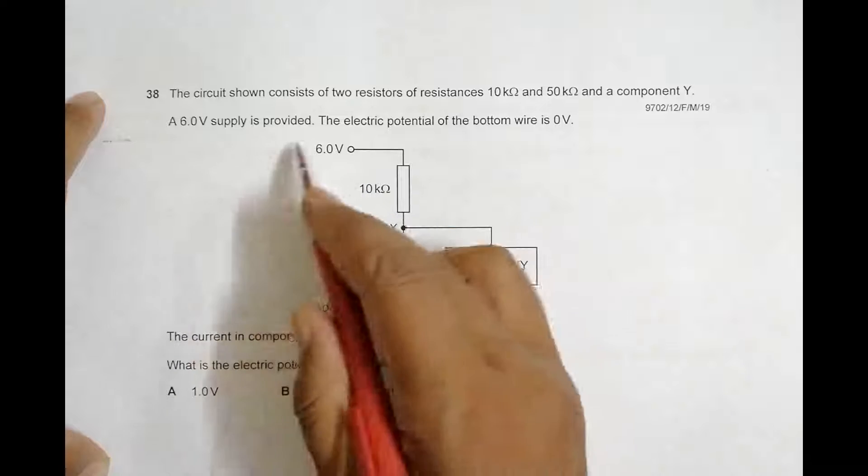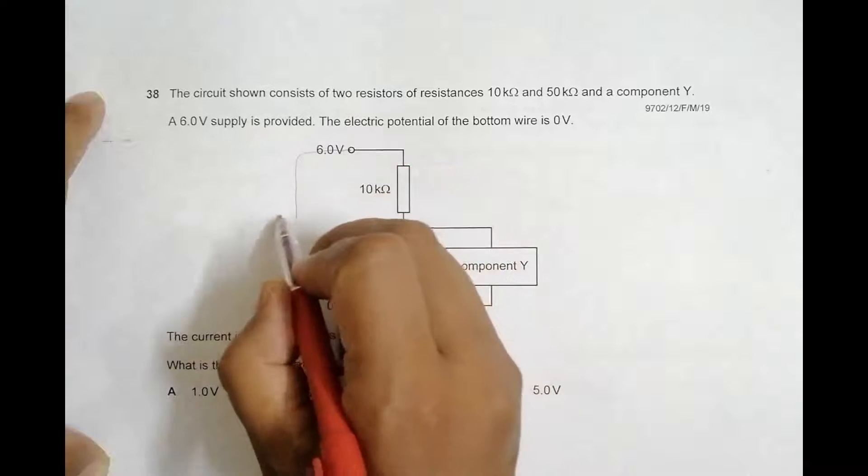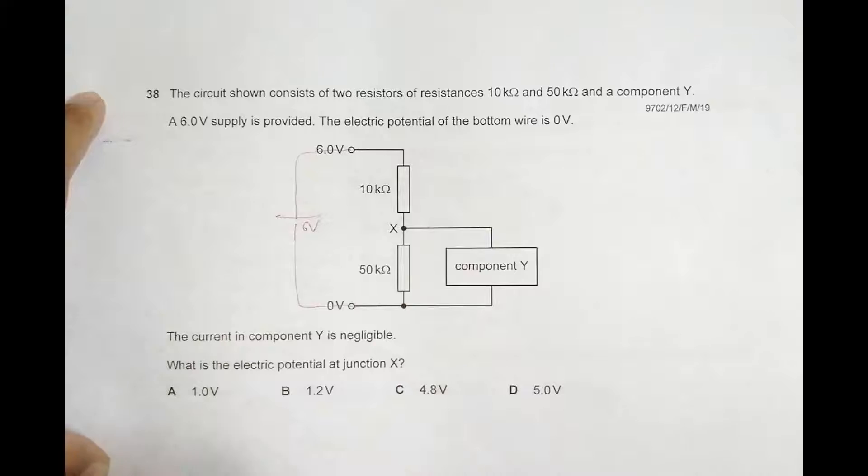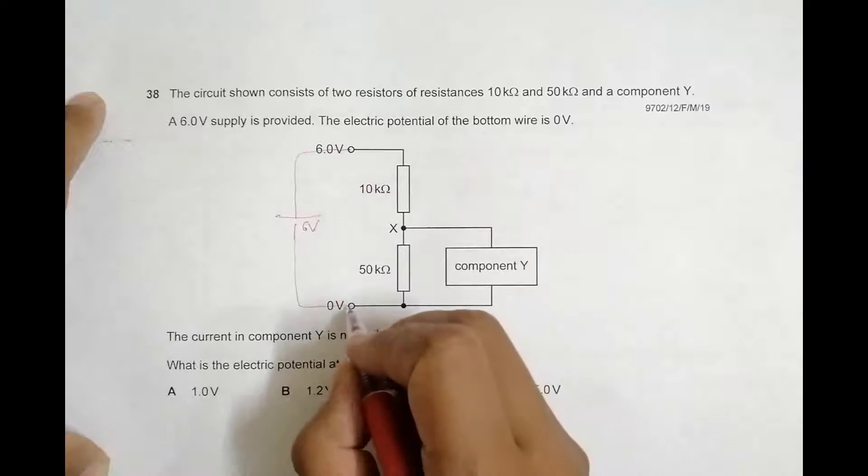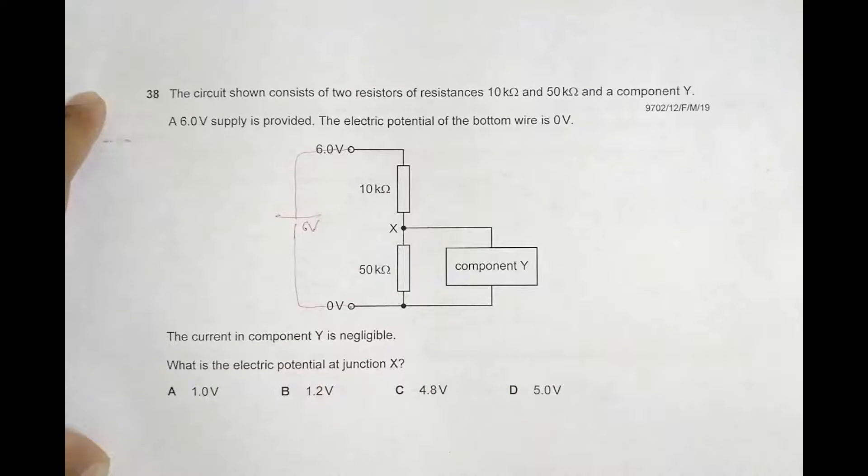A 6-volt supply is provided, so this is the 6-volt supply. I can visualize it as a source here which is 6 volts. The electric potential of the bottom wire is 0 volts, so we consider one end at higher voltage and the other at 0.